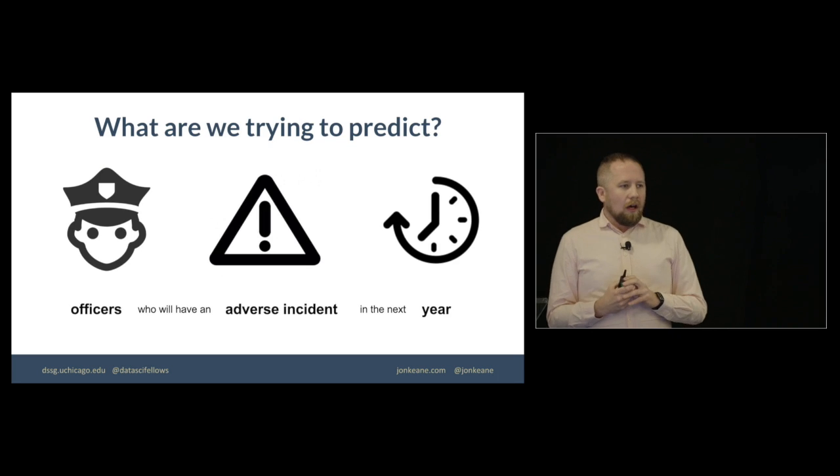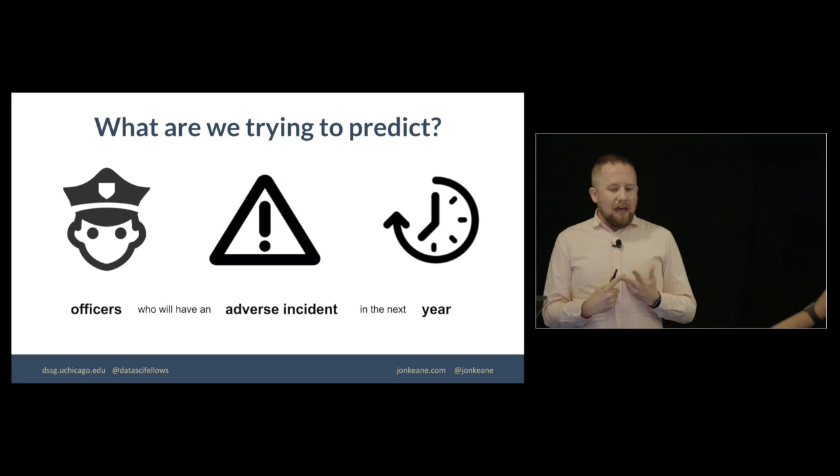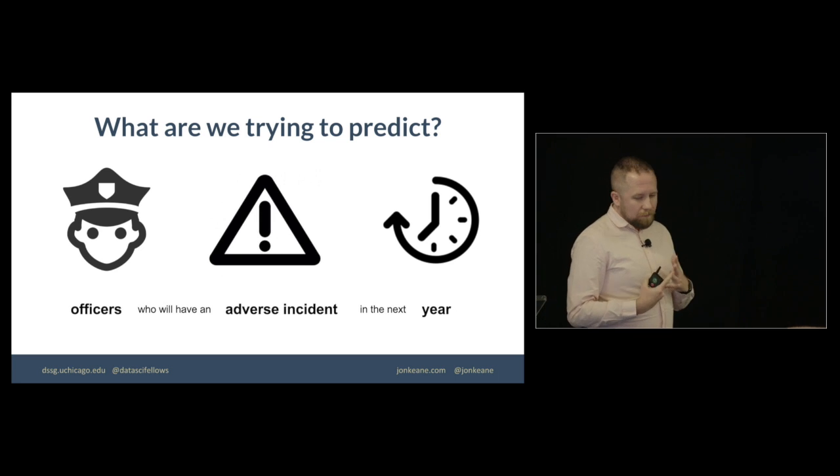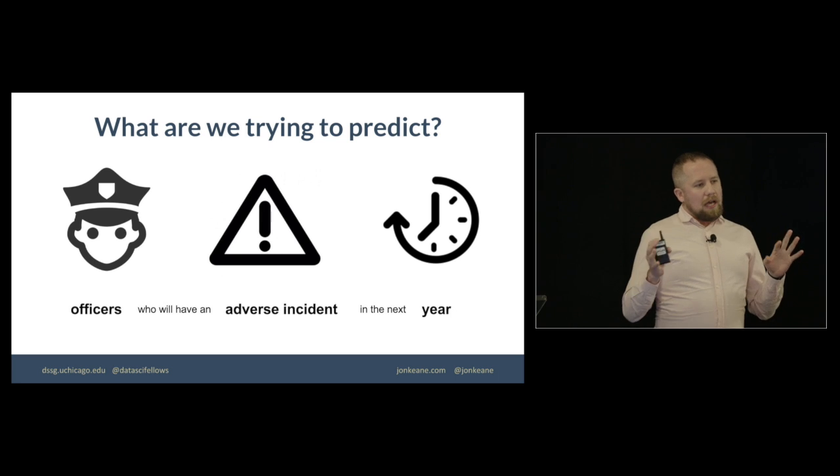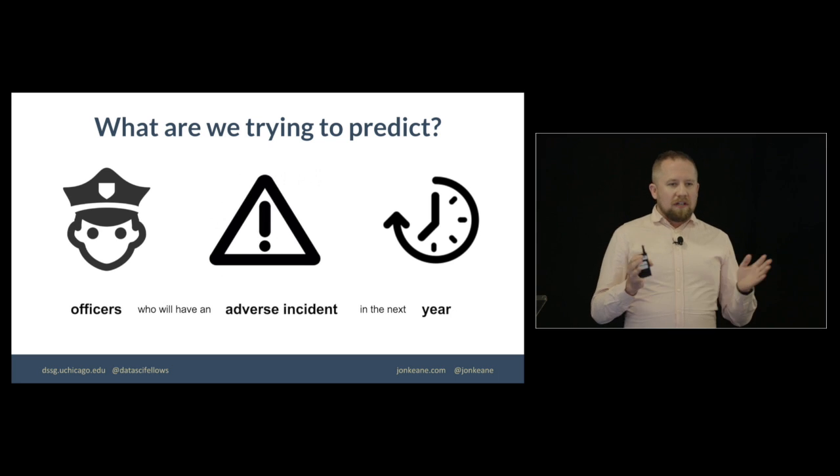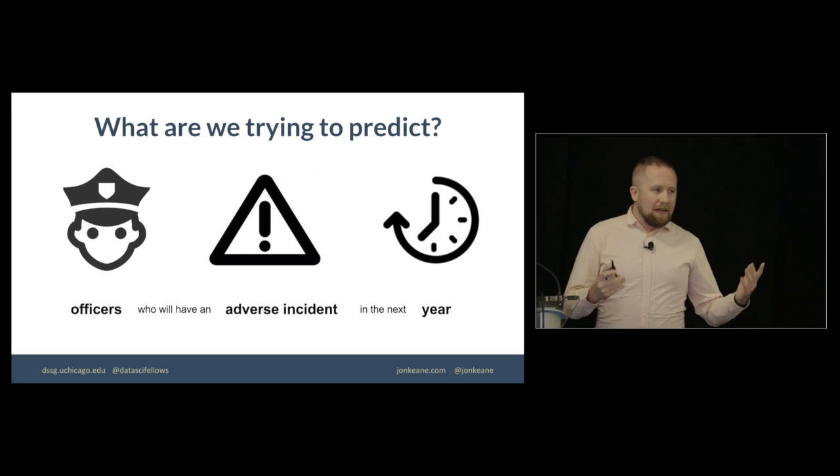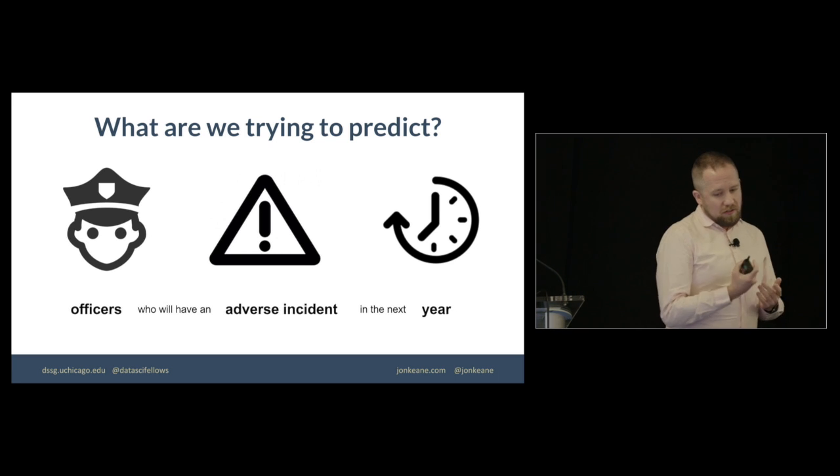So what are we trying to predict? We constrained our problem to predicting officers who will have an adverse incident over the next year. And this seems like a fairly broad time window, but the types of interventions that were possible are things that will take time, and so we didn't want to narrow it down to a week or a month because it might take that long to schedule a training for tactics, concerns, or something like that.